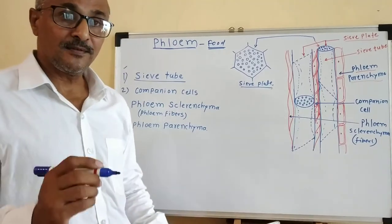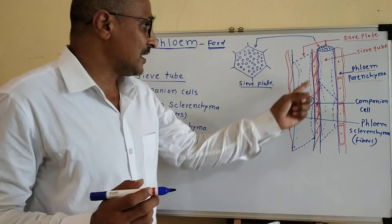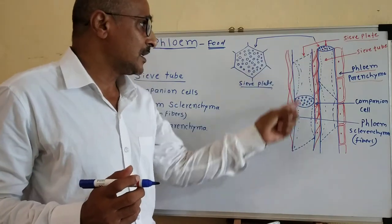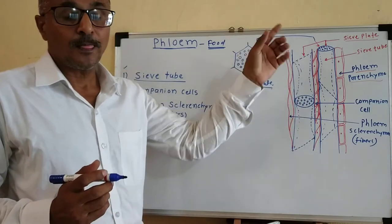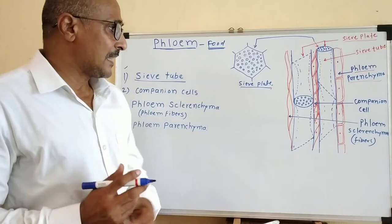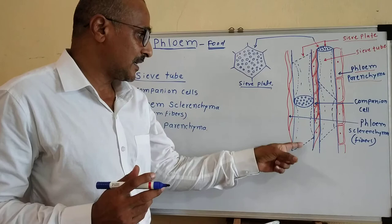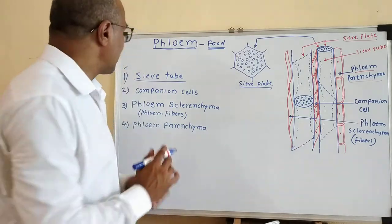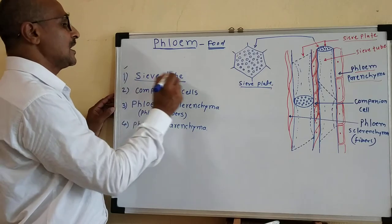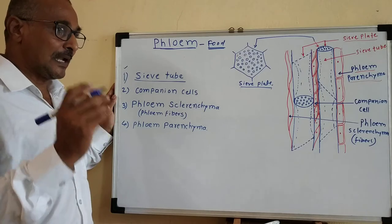Sieve, in Marathi we say 'chardini'. So like that, there are such type of pores on the plates through which the food material passes from one cell to other cell. So this one is the sieve tube — it is accommodated or situated with sieve plates. The first element is sieve tube, also called as sieve tube element.